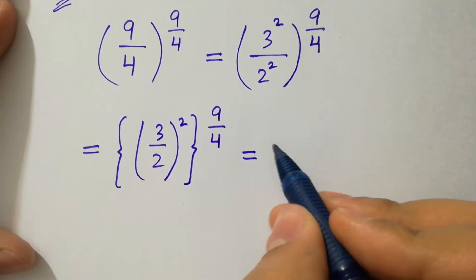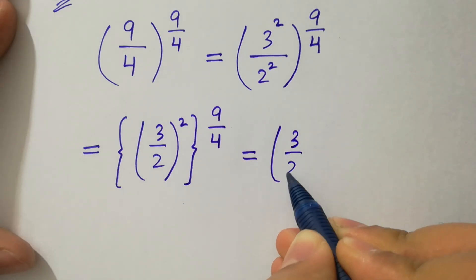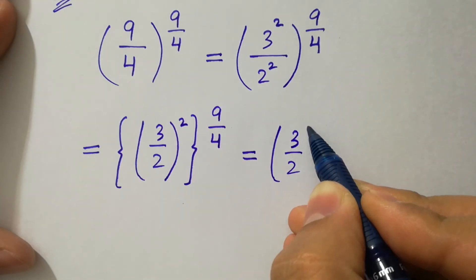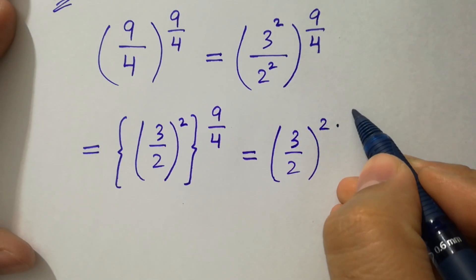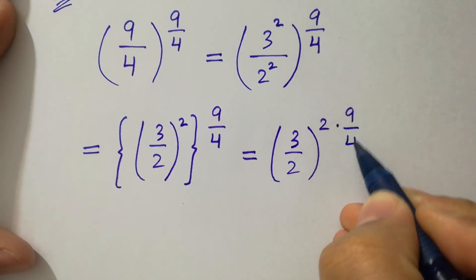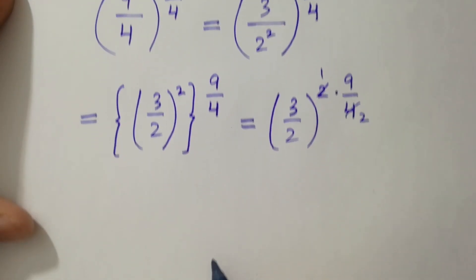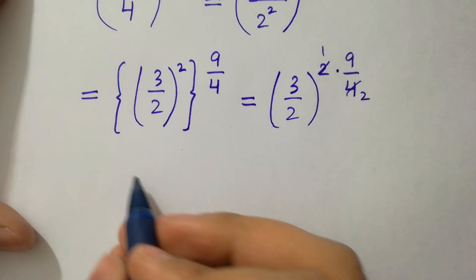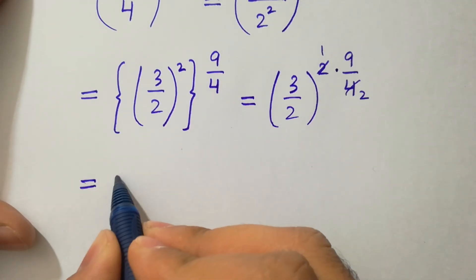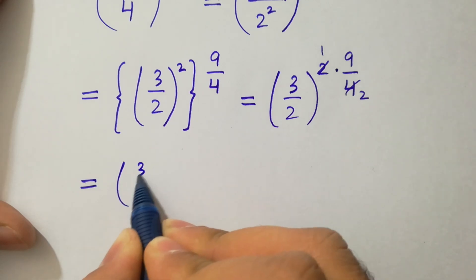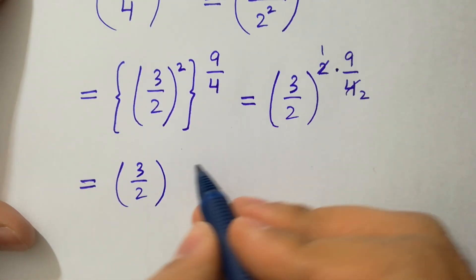It can be written as 3 over 2 to the whole power 2 times 9 over 4, where 2 times 2 is 4. So we have 3 over 2 to the whole power 9 over 2.